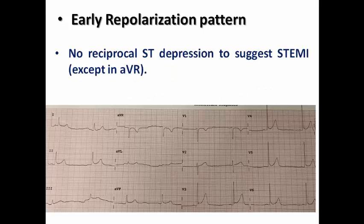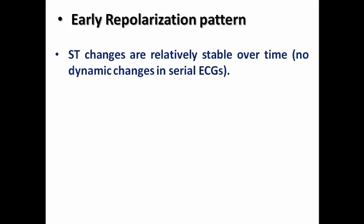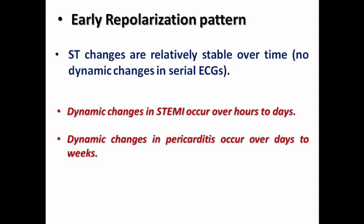There is no reciprocal ST depression in early repolarization except in AVR, which shows slight ST depression — similar to the sign seen in pericarditis. So you would not see the reciprocal ST depression typical of STEMI patients. Also, the ST changes are relatively stable over time — there are no dynamic changes in serial ECGs. In STEMI, dynamic changes occur over hours to days; in pericarditis, over days to weeks; but in early repolarization pattern, they are stable and static.